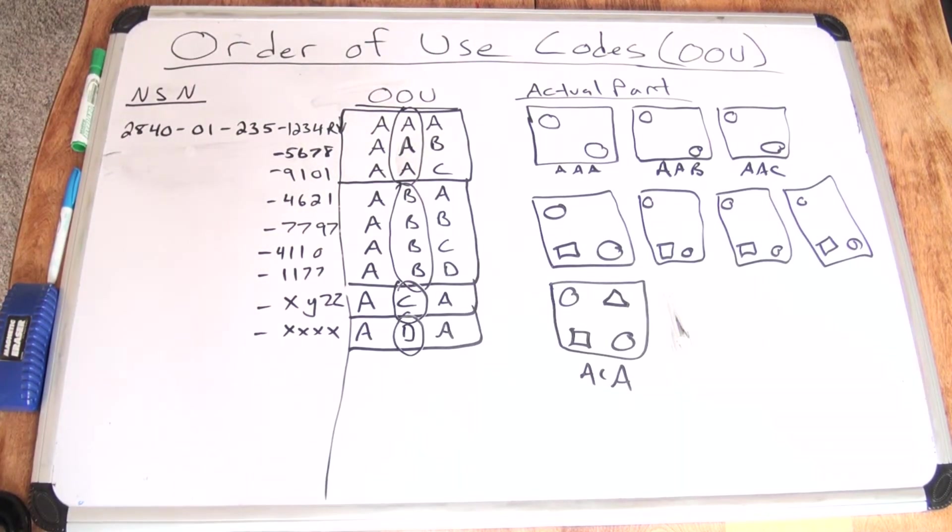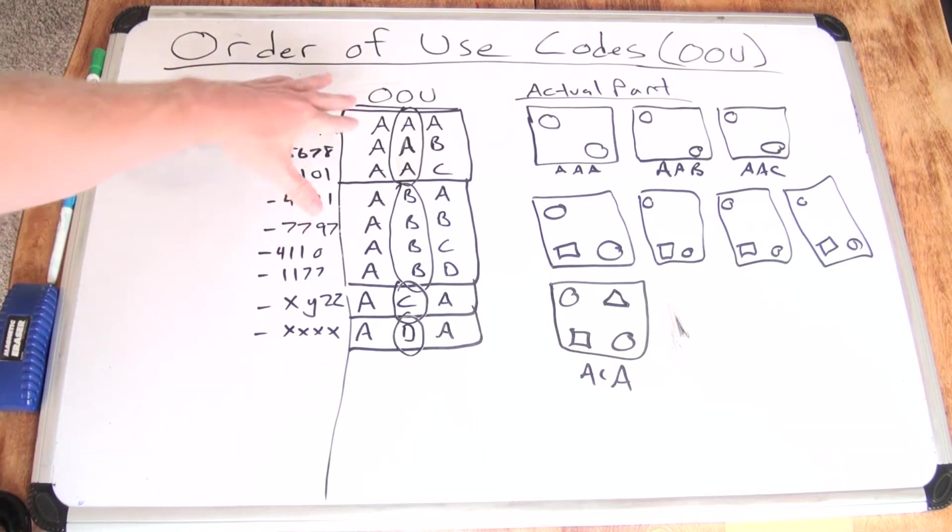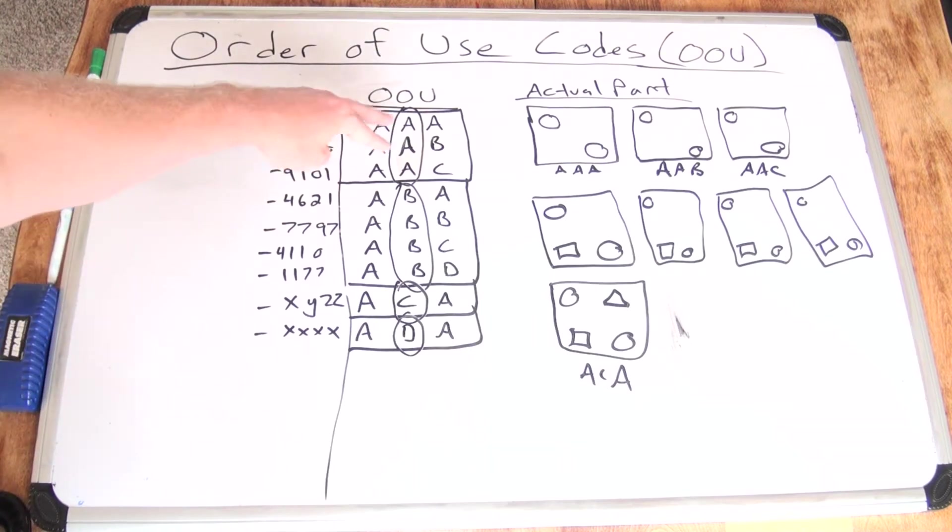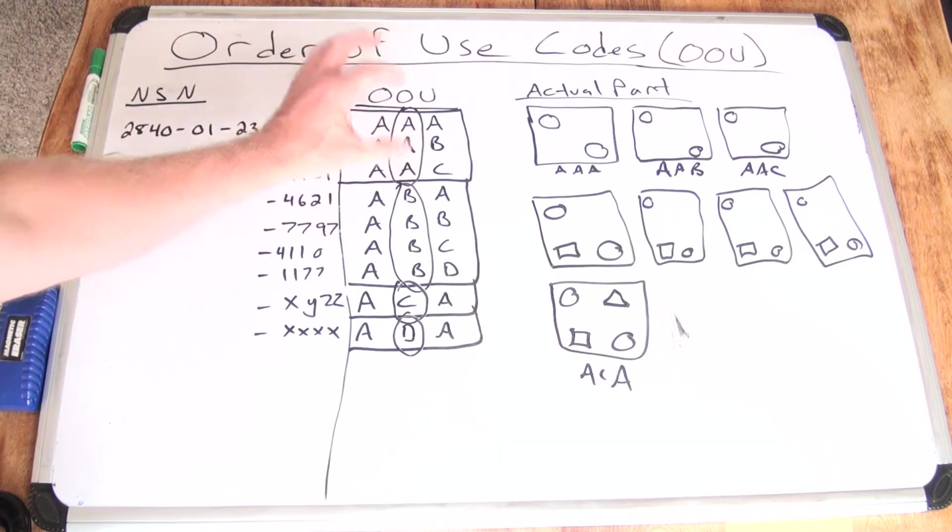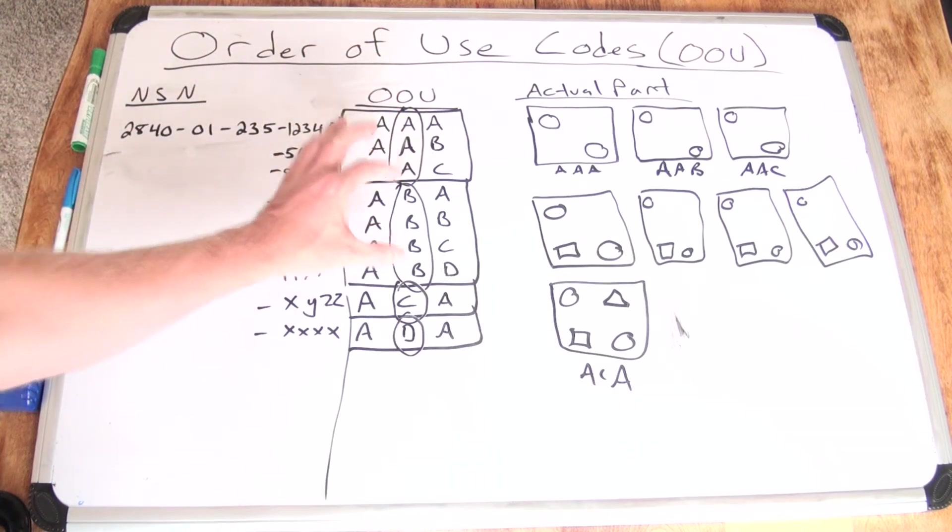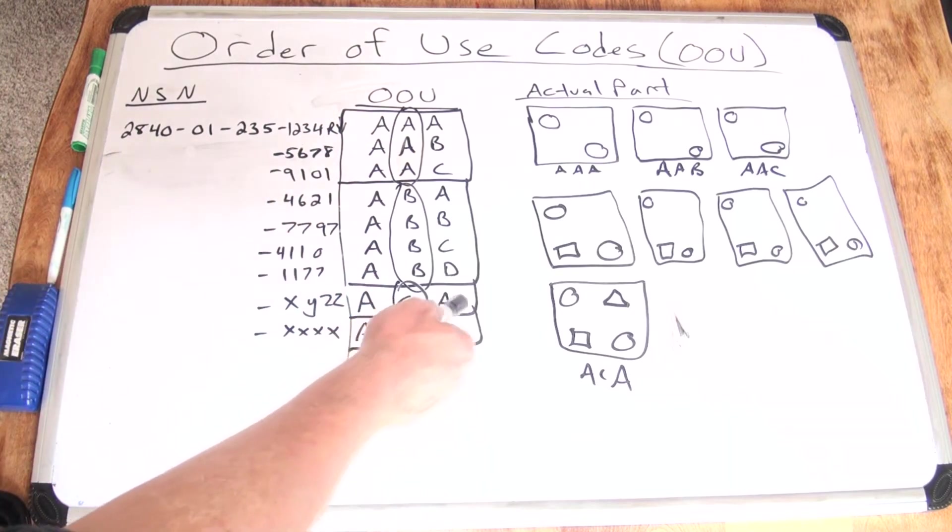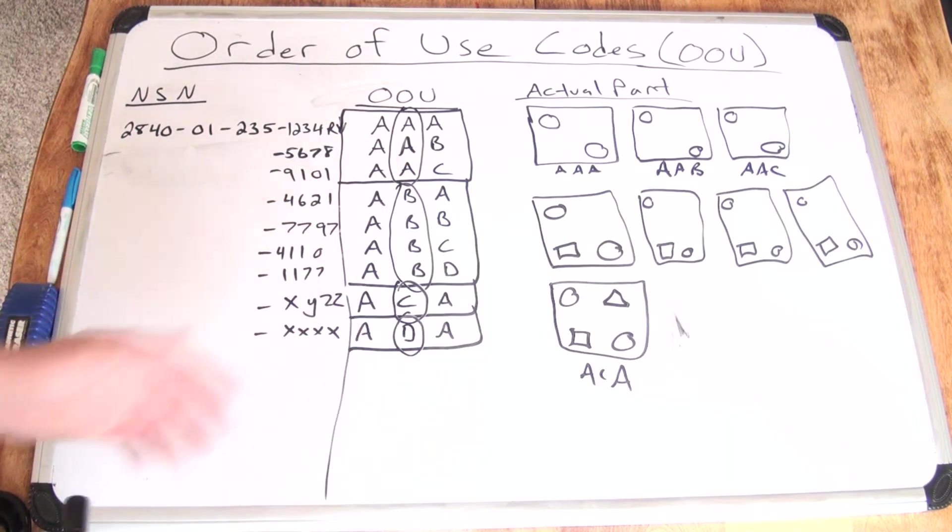Now order of use is broken into subgroups. The subgroups are divided by the middle letter. The first letter A is kind of redundant. Every single stock number is going to have an order of use A for the first designator. The second one is the subgroup designator. So all the A's in the middle group are clumped together. All the B's are another subgroup. C, it's a bachelor item within a subgroup. And D, same example, bachelor item within the subgroup.